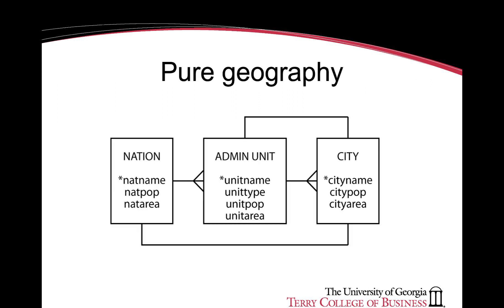One example of a simple data model is a geography model representing the relationships between nations, administrative units as parts of a nation such as states, and the cities or towns present within a state. We have three entities: nation, administrative unit, and city.